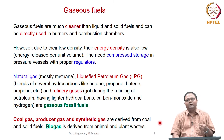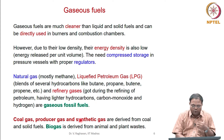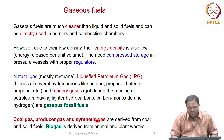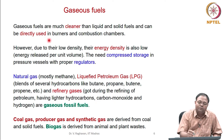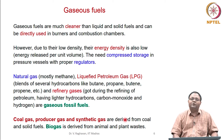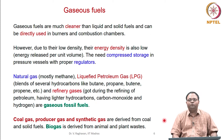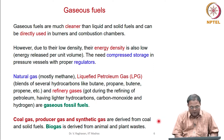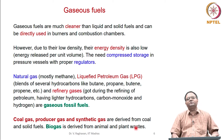Solid fuels like coal or biomass are used to generate synthetic gas or biogas. Burning coal or biomass completely presents many challenges, so it is easier to convert them into gases and use those gases in combustion chambers. Since gaseous fuels can be directly used in combustion chambers, producing gaseous fuel from solid fuel is advantageous. In gas turbine engines, it is easy to use gaseous fuels.